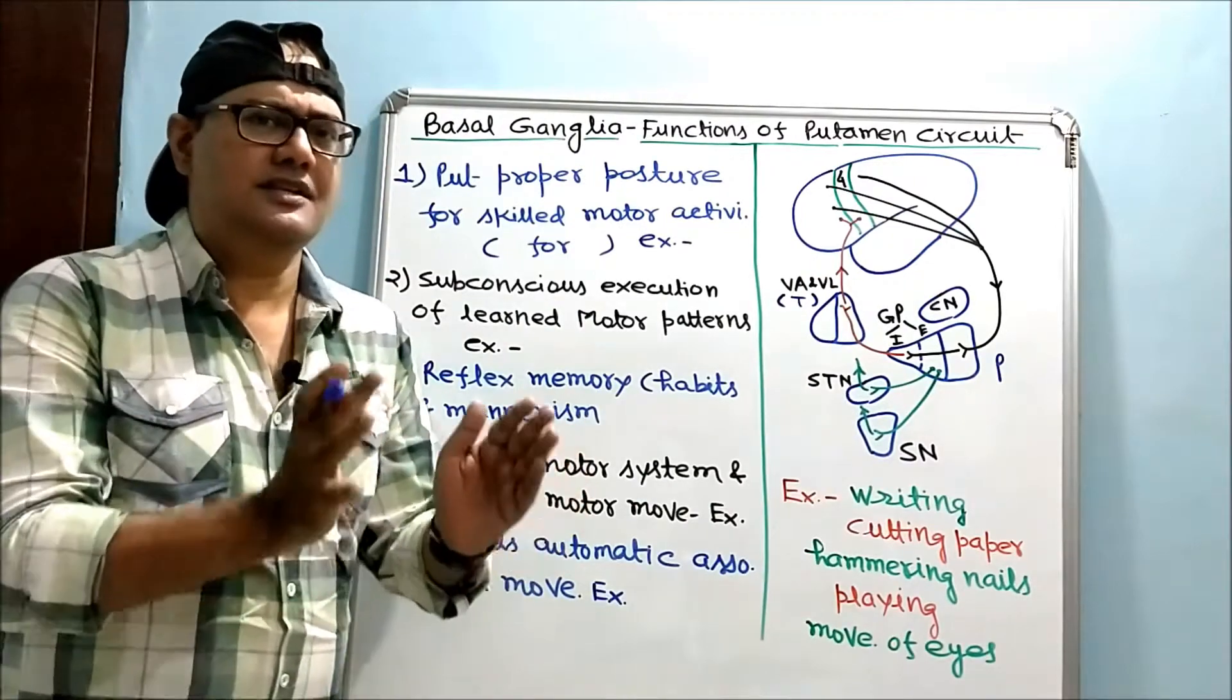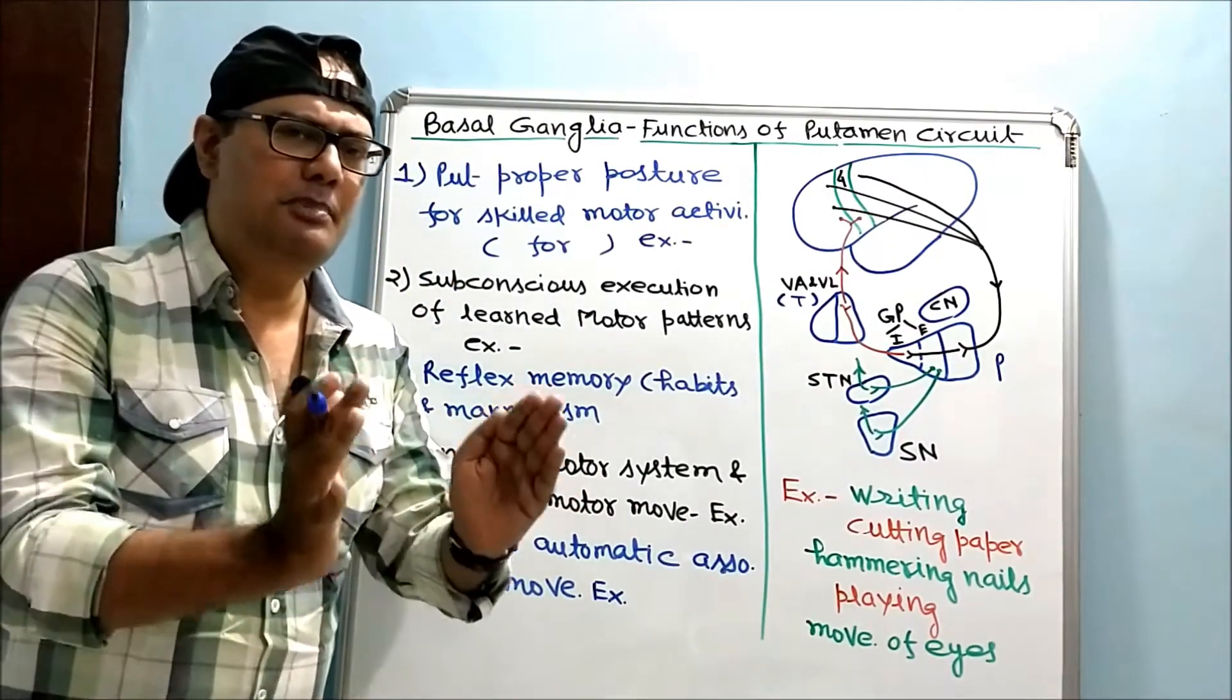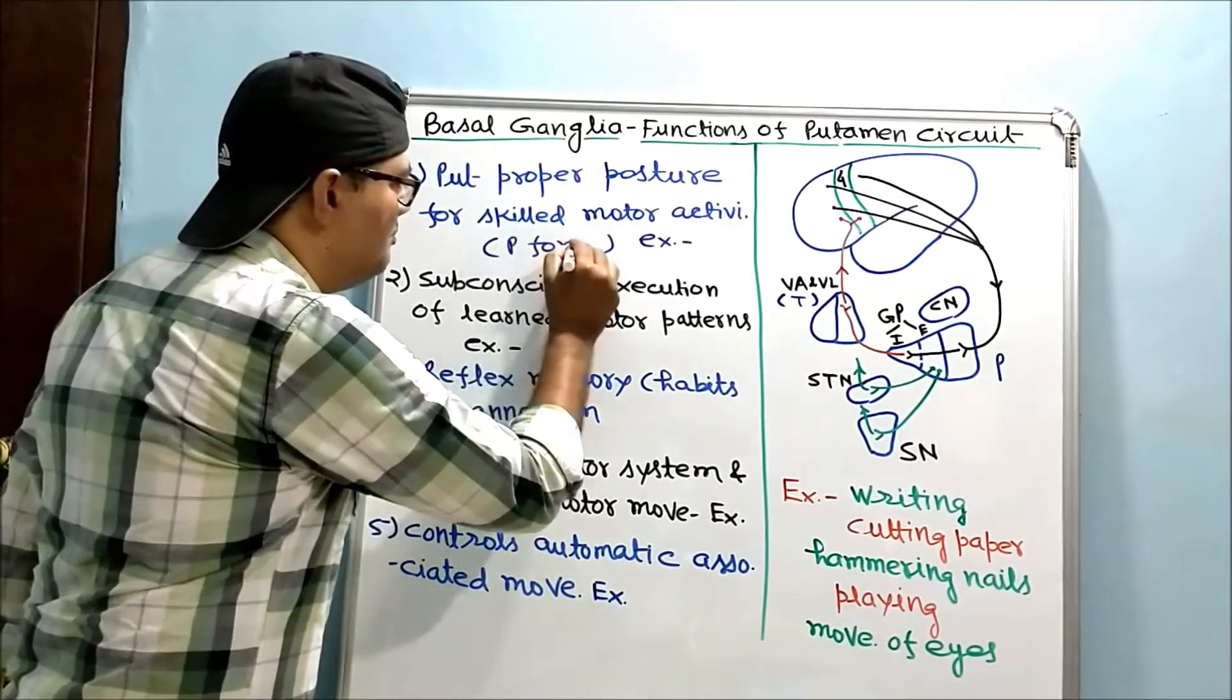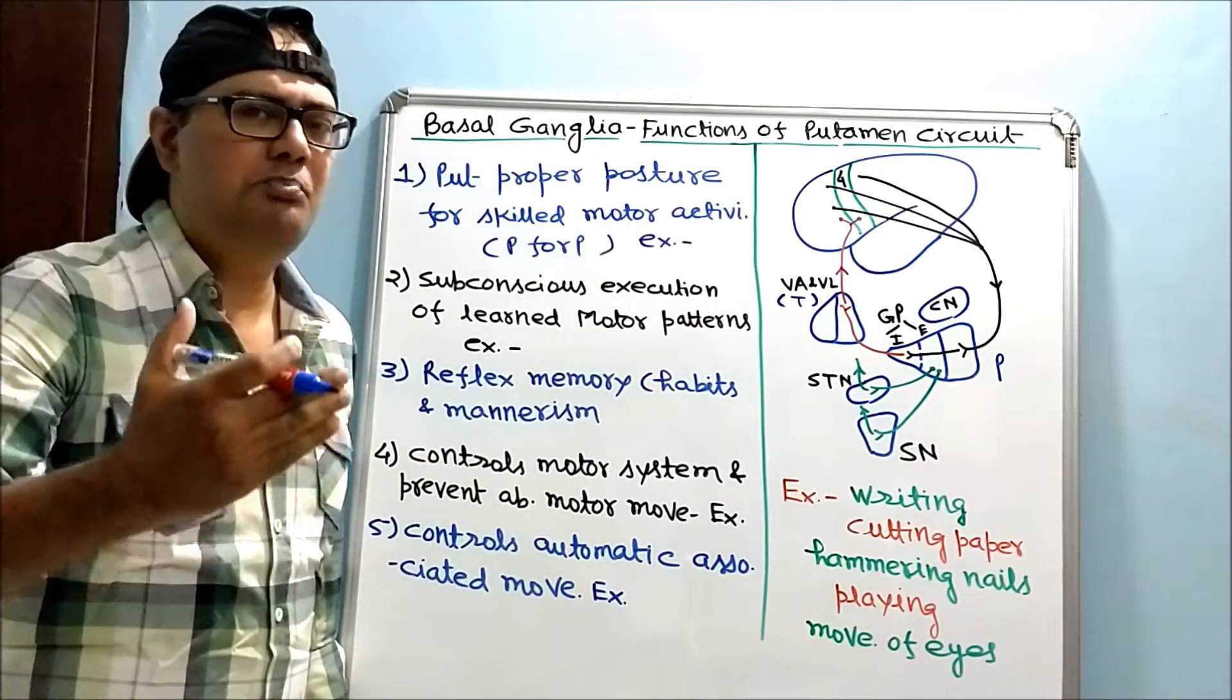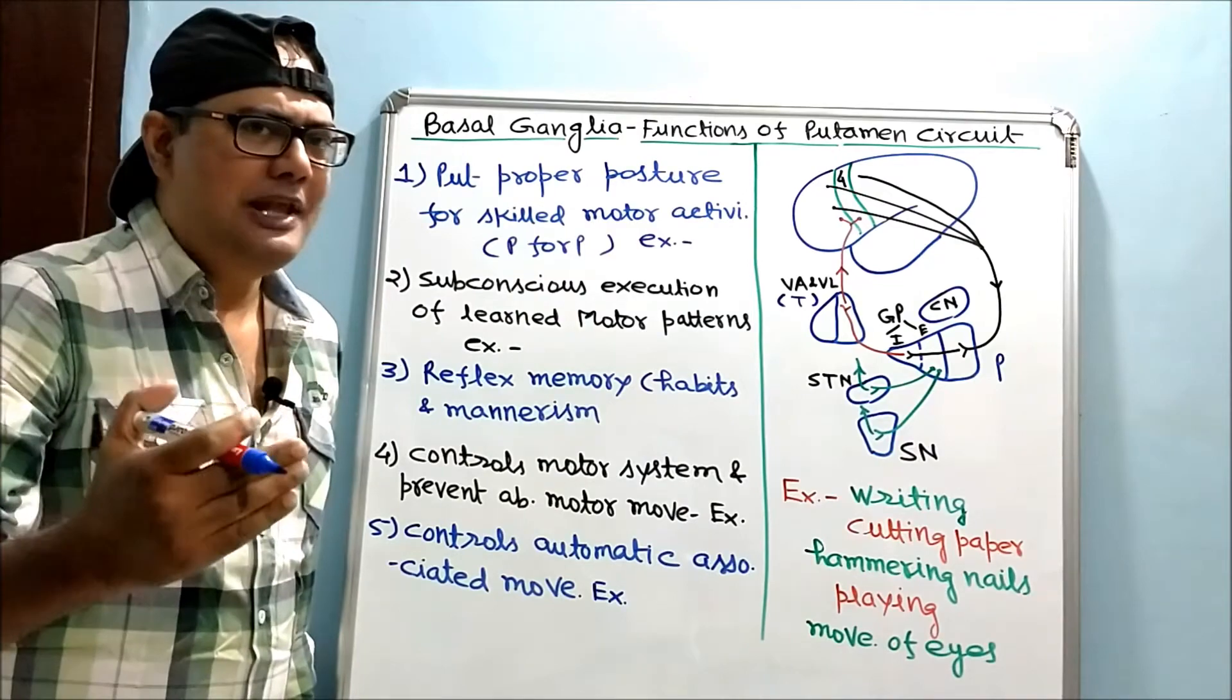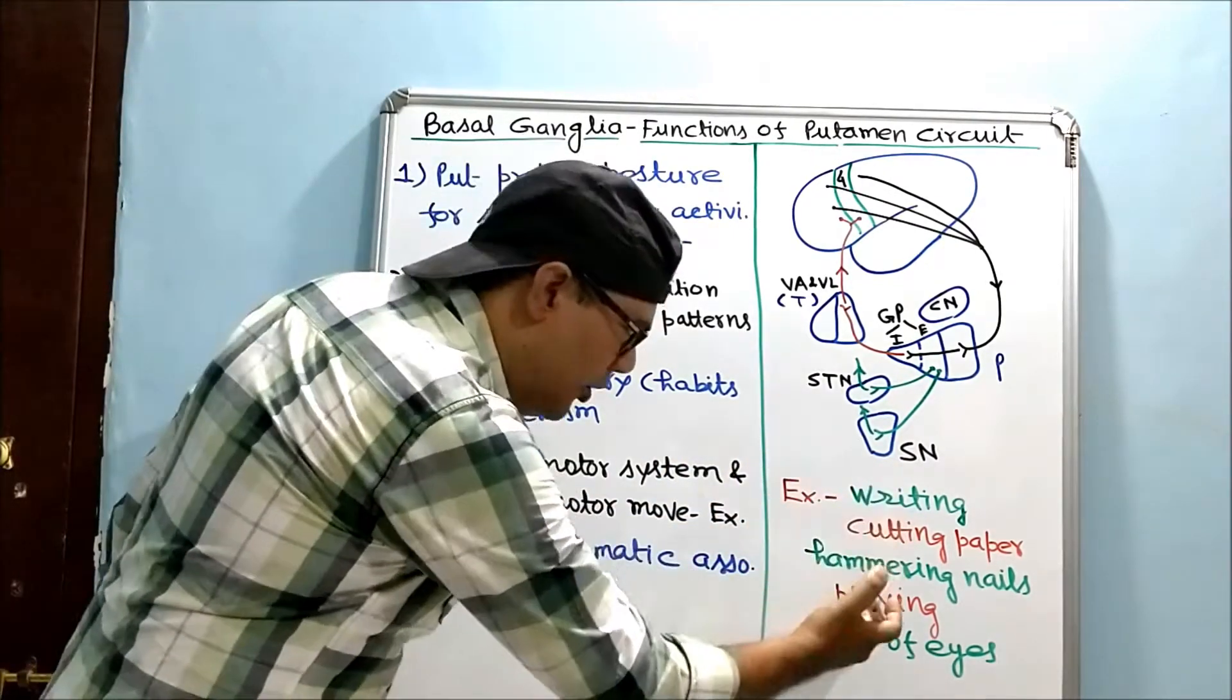Now let's discuss its function. Three functions are basic physiological functions based on the same concept: P for P. Putamen circuit is for putting proper posture during complex and skilled motor activities like writing.